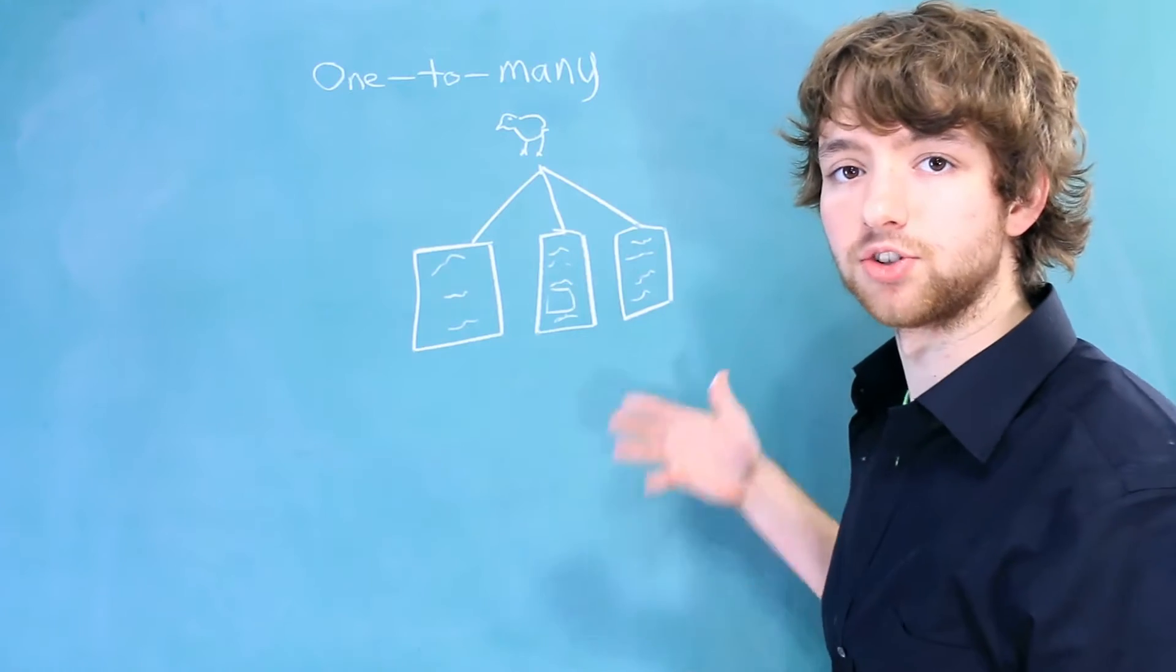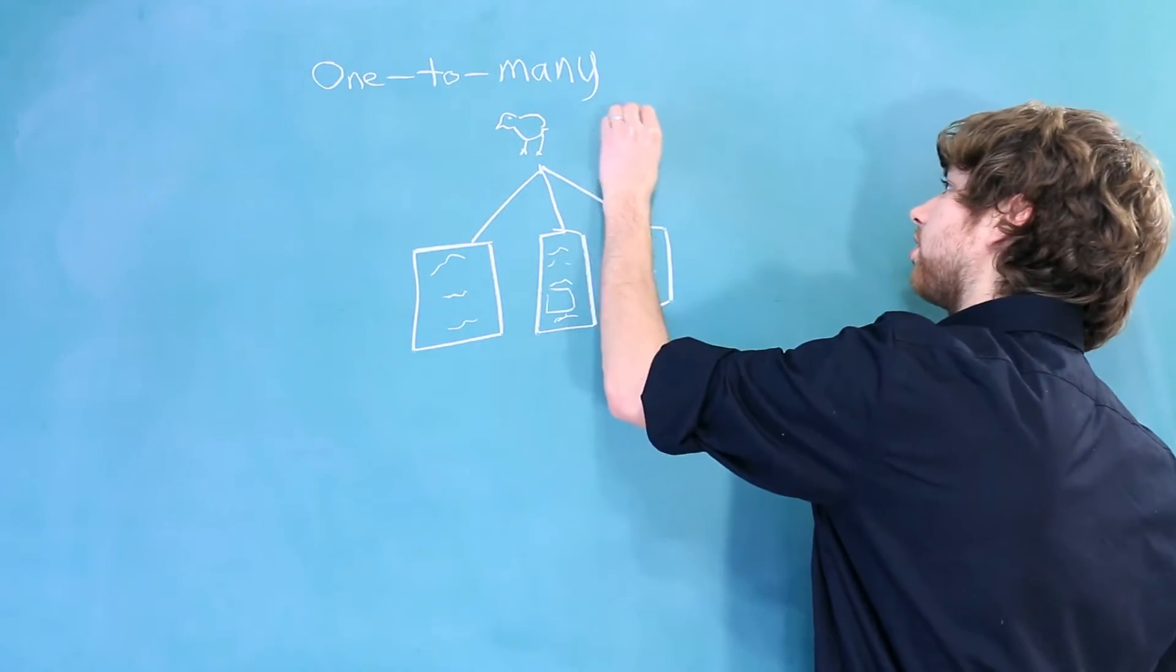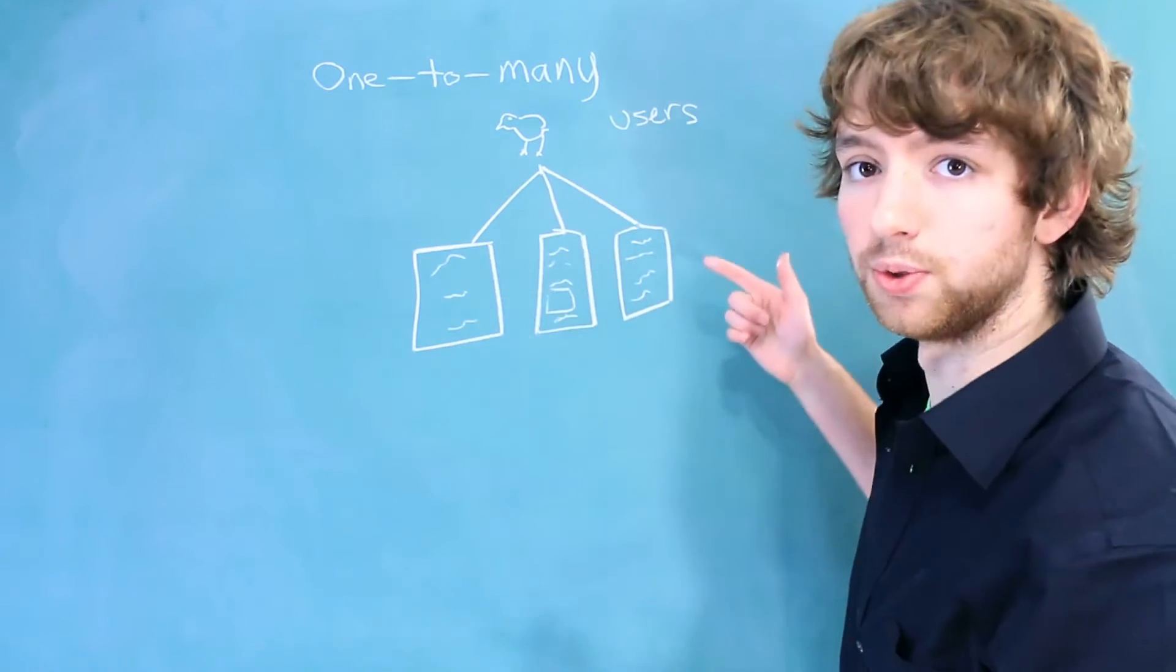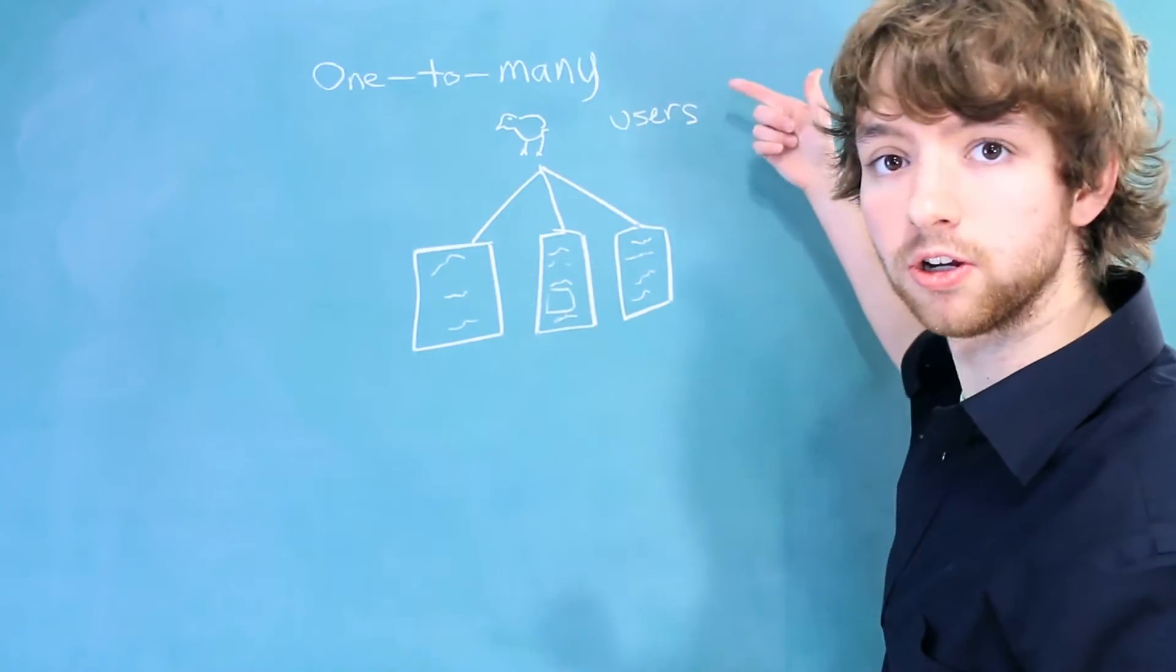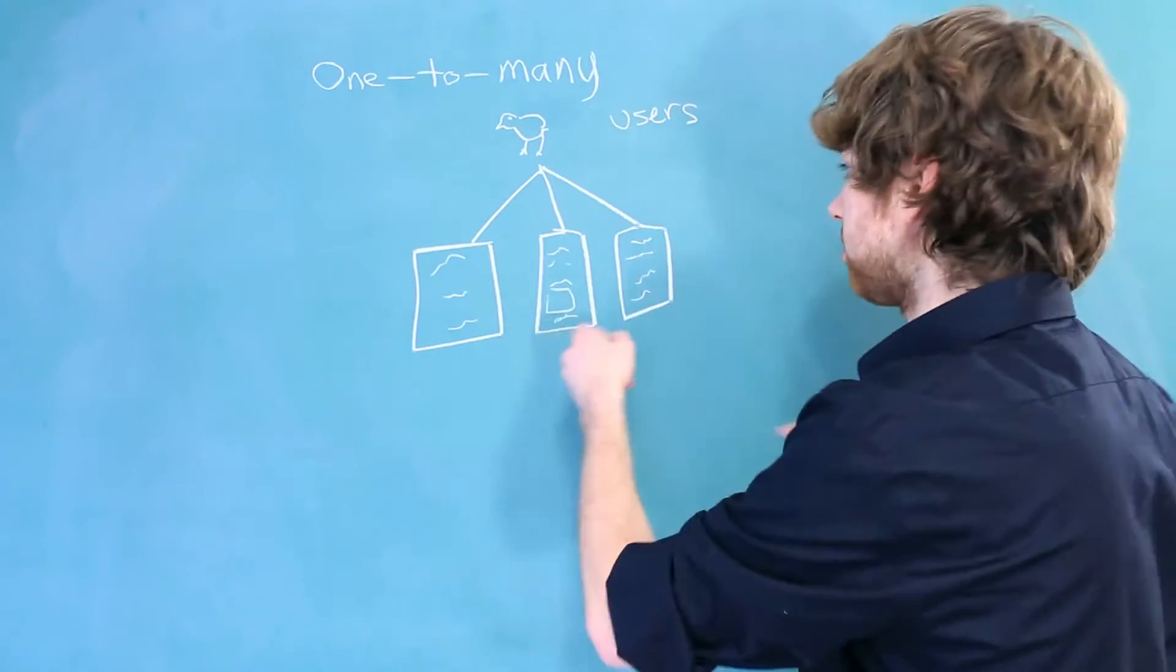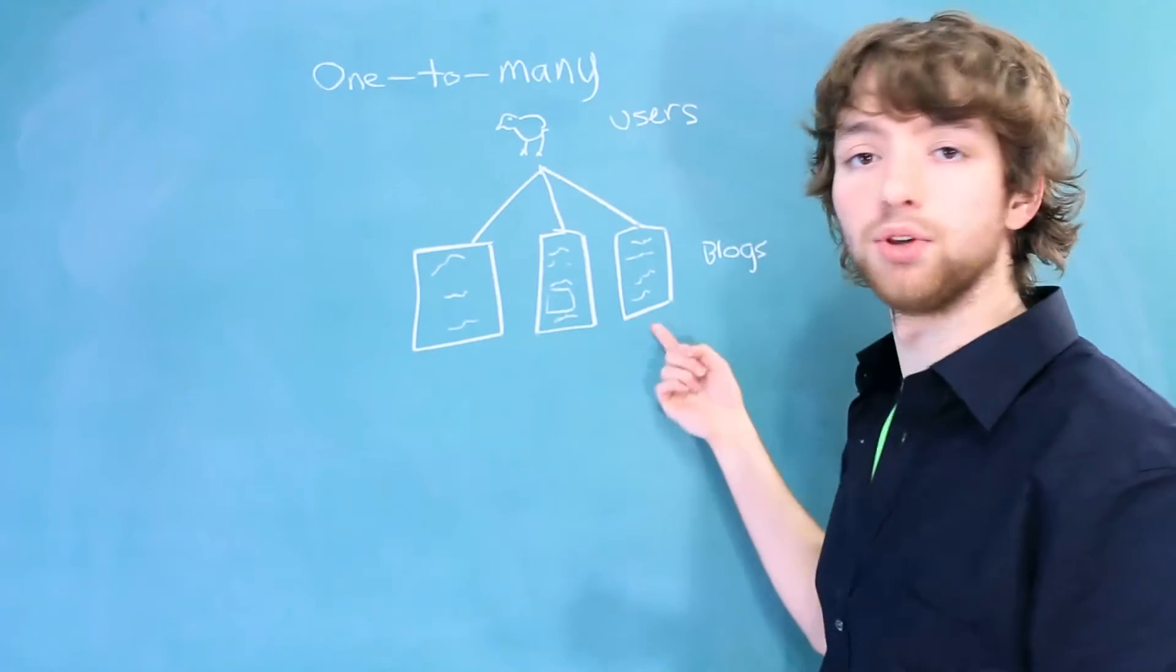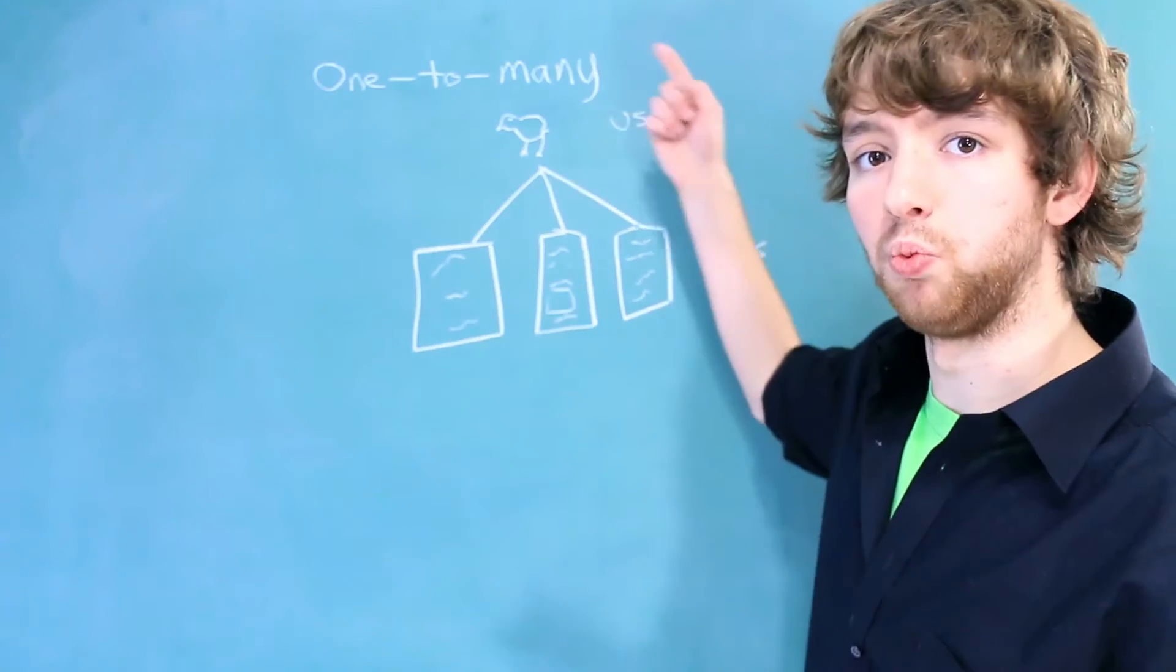The reason this is a one-to-many relationship is because if you take one of these, let's say users, and then you compare that to these. So you would say one user can have many blogs. But then you take one of these and compare it to this. So you say one blog can be owned by only one user.